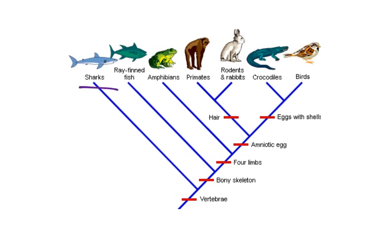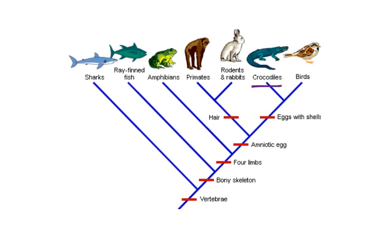It shows sharks, it shows the ray-finned fishes — your bony fishes, a lot of fishes that you're familiar with. It shows the amphibians, it shows the primates, which is the group that man would fall into, rodents like rabbits and mice. And then it shows the crocodilians and the birds.